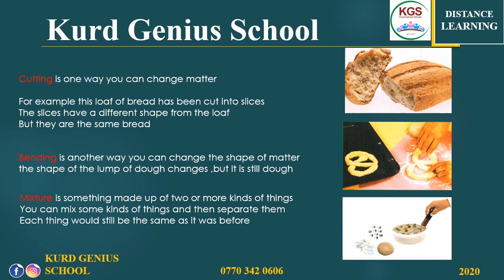What about mixture? A mixture is something made up of two or more kinds of things. You can mix some kinds of things and then separate them. Look at the picture — we have a container where we mix three different kinds of things: marbles, paper, and sand. We mix them together and we can separate them again. Each thing would still be the same as it was before. When you separate the sand from the mixture, the sand does not change to another thing — it is still the same sand.